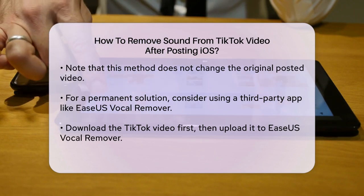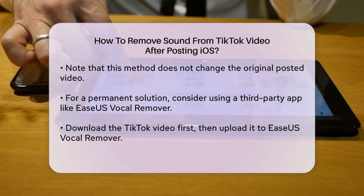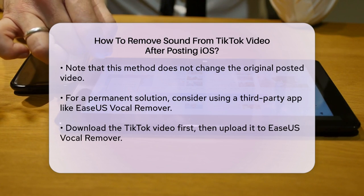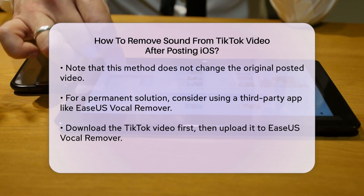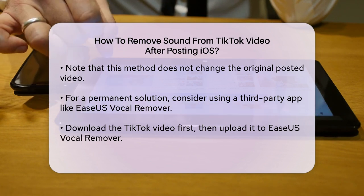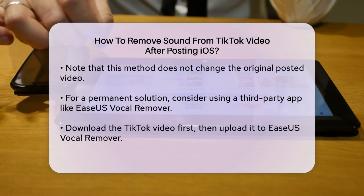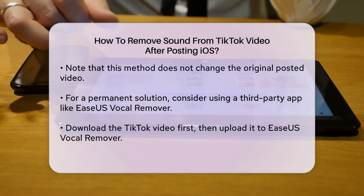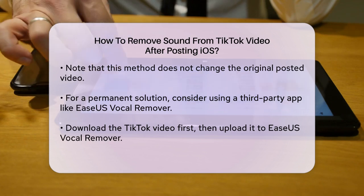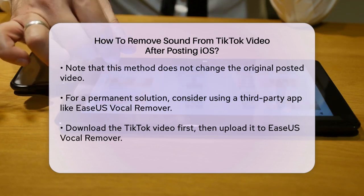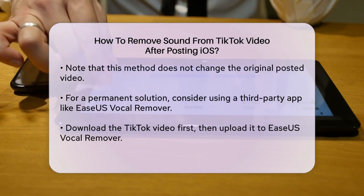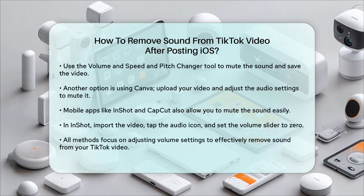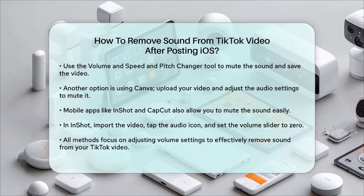Another option is to use Canva, an online video editing tool. Go to the Canva website, upload your video to the video editor interface, and select the audio icon. Drag the volume bar to the left to reduce the volume to zero. This method allows you to remove the sound entirely and then download the edited video.